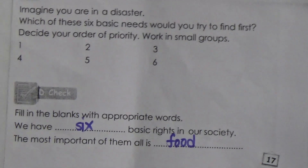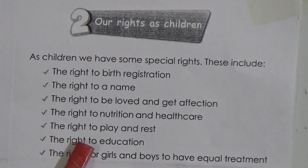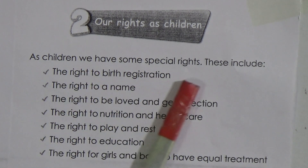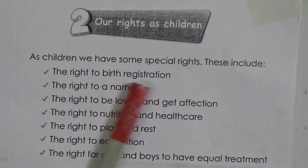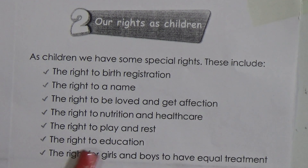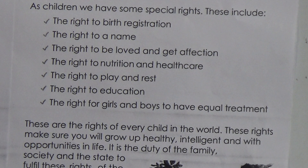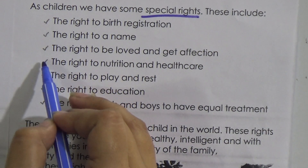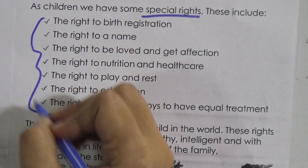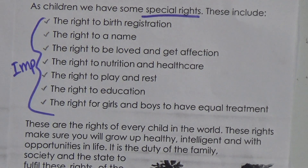Now we go to Lesson 2: 'Our Rights as Children.' All of you are children and you have some special rights in addition to the basic rights. As children, these special rights include: the right to birth registration, the right to a name, the right to be loved and get affection, the right to nutrition and healthcare, the right to play and rest, the right to education, and the right for girls and boys to have equal treatment — that is seven special rights.